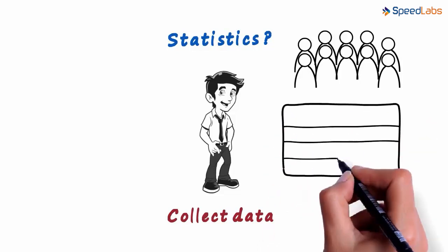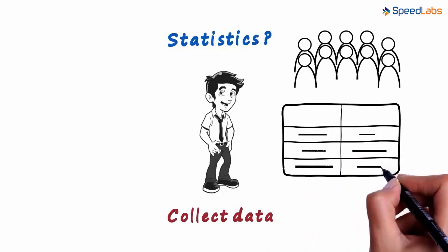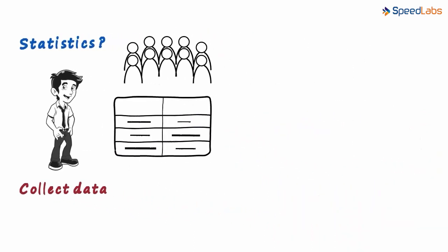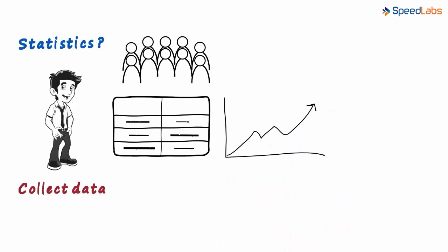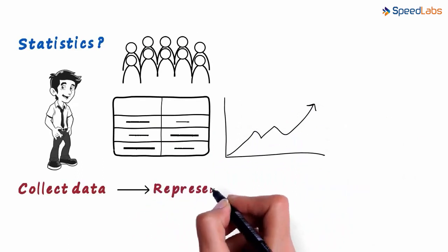He might use tables which have various rows and columns, or he might even use graphs to notice a particular trend. This means he will represent this data in an organized way.